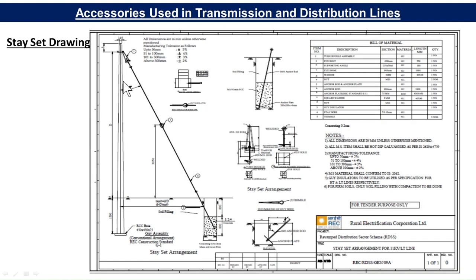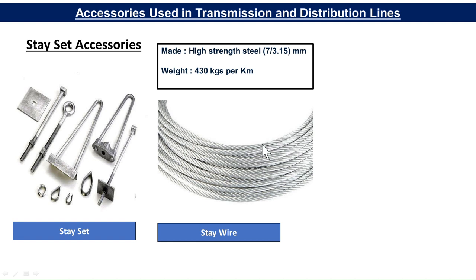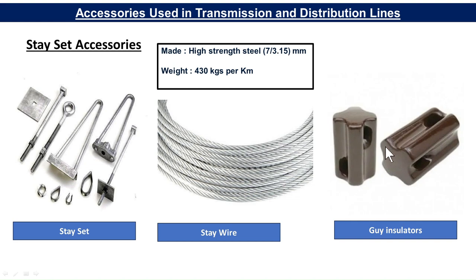These are the accessories of the guy stay set. The stay wire is made of high-strength steel, 7 × 3.5 mm, with a weight of 430 kg per kilometer. The stay set includes the guy insulator and various other components. All the different parts of the stay set are shown here.